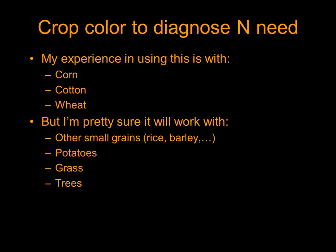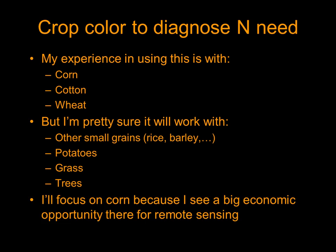With any of these crops, you need to know your crop and whether there's anything else that would make it light green or yellow. In corn in the Midwest, 98% of the time if it's light green or yellow, it's due to a nitrogen issue — the other two percent is probably sulfur and potassium. In cotton and wheat, in humid regions, most of the time it's going to be nitrogen. I'm really going to focus on corn, and I see a big economic opportunity with remote sensing.